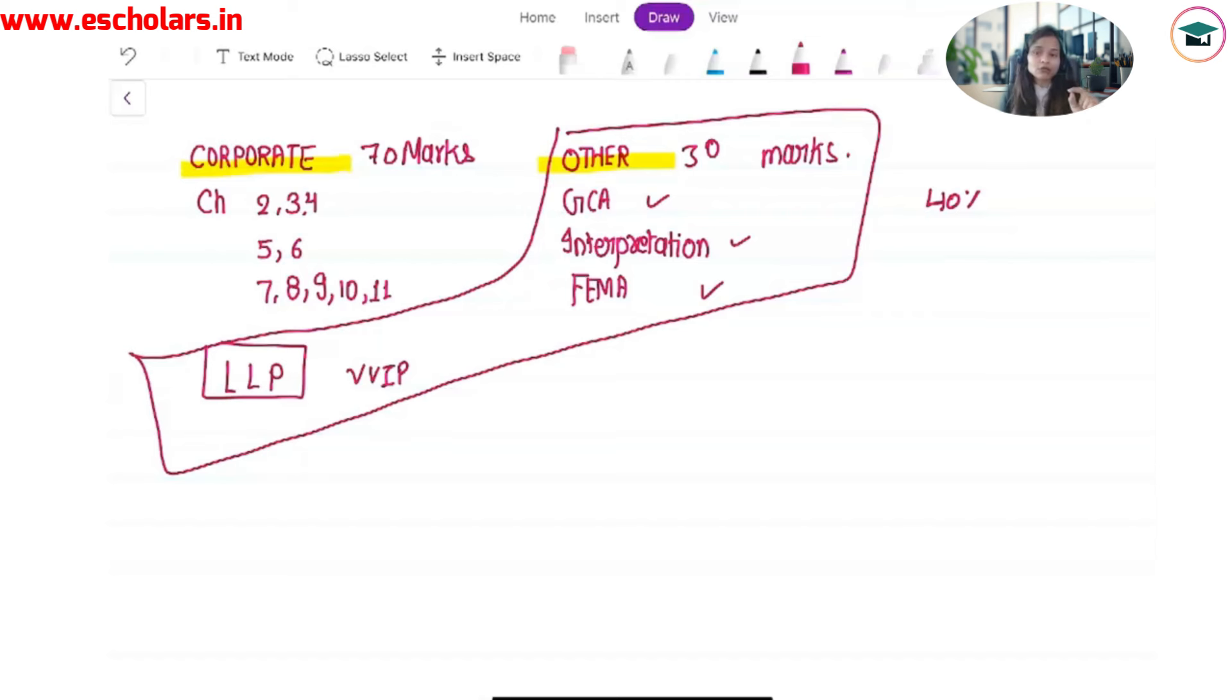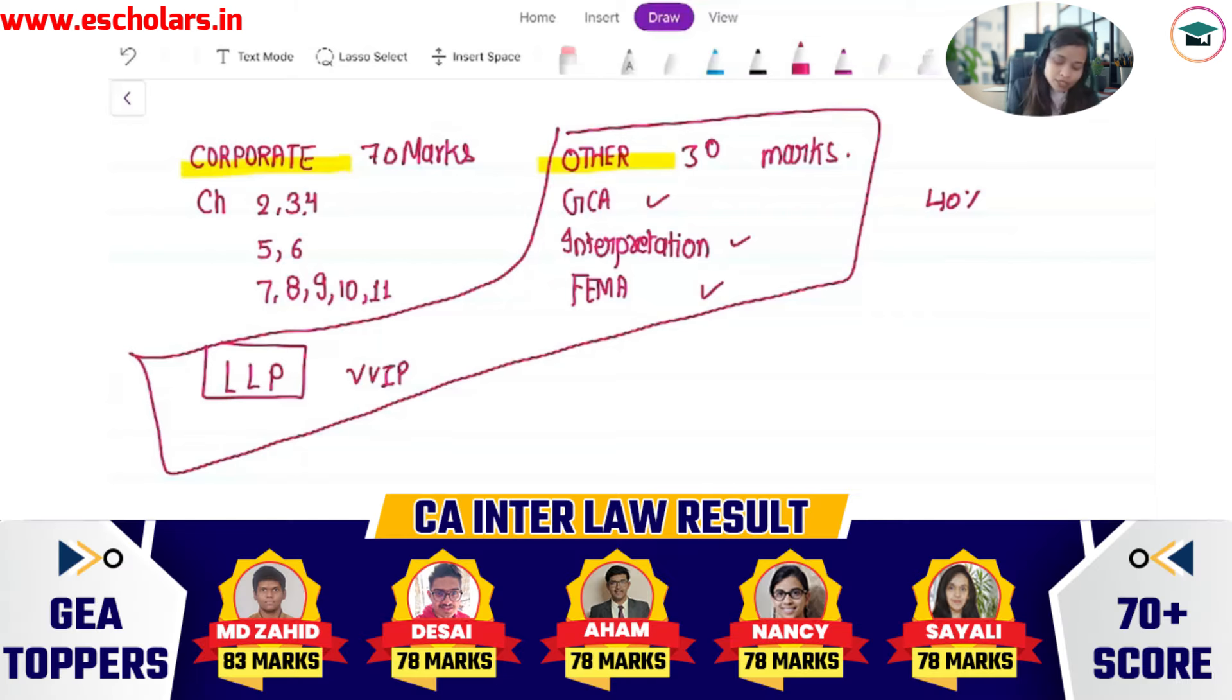What do you need to be sequenced in 58 marks? First of all, you need to do these 5 chapters: 7, 8, 9, 10, 11 - Management, Administration, Dividend, Accounts of Companies. Then you have to do chapter 5 and 6, that is Deposits and Charges.